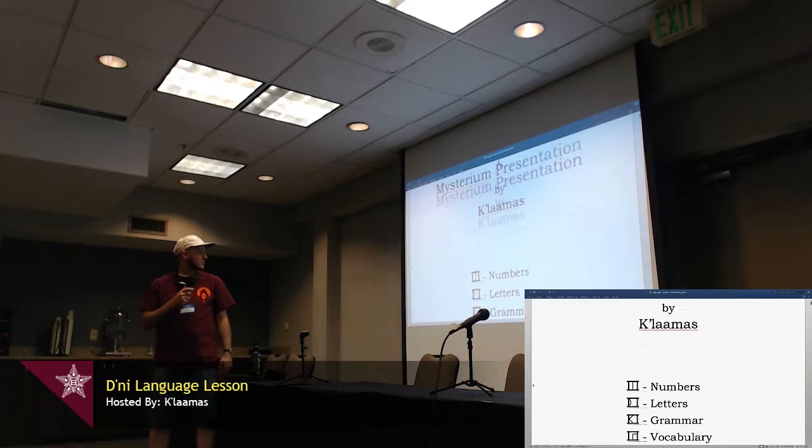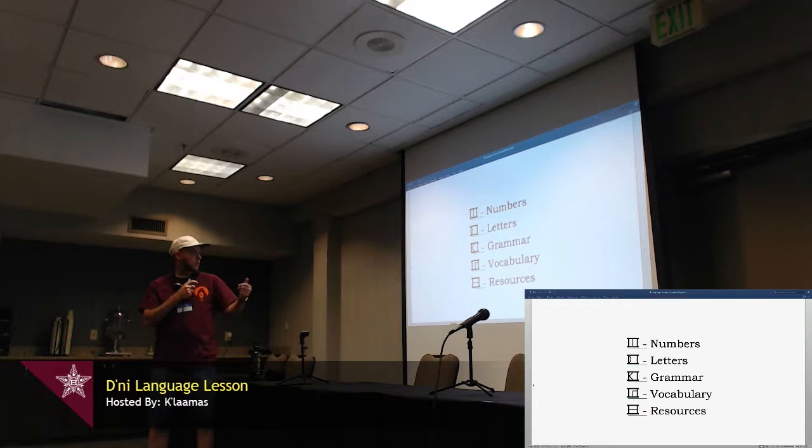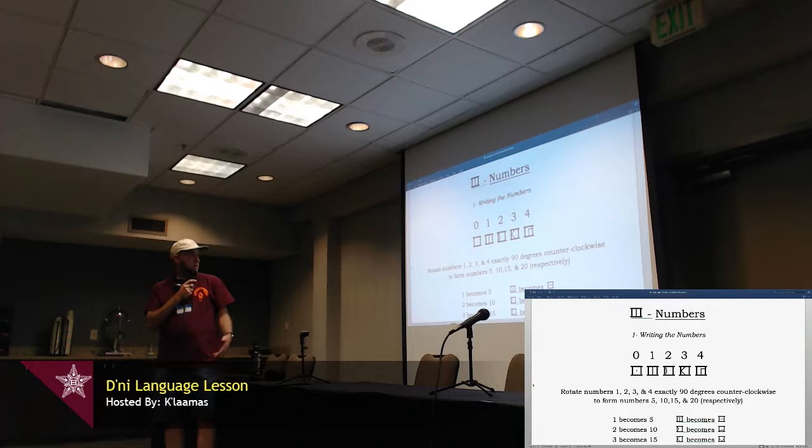Okay, we'll start with numbers, which a lot of you know already, then a bit on the letters, and then mostly with the grammar, and then with vocabulary, and some resources so you can learn on your own. We all know the D'ni numbers are based off of really one through four simple strokes. Then you just rotate those four numbers 90 degrees counterclockwise to form 5, 10, 15, and 20.